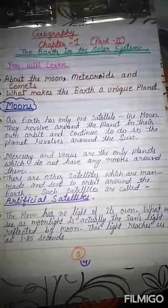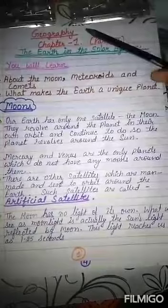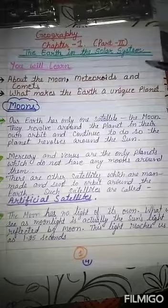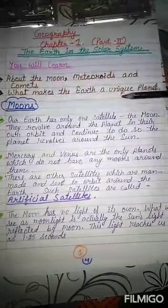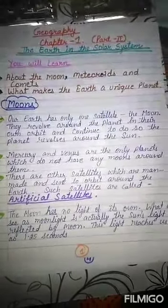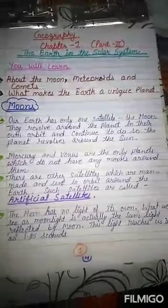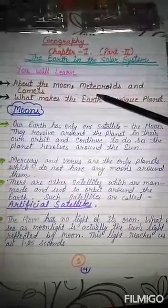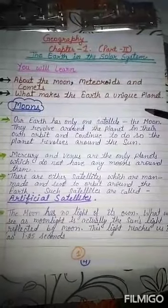Class, in a previous chapter and previous video, we covered the geography chapter named 'The Earth in the Solar System.' In that video, we read about planets, the universe, constellations and related topics. But in this video, we will read about the moon, meteorites, and comets, and what makes the earth a unique planet.